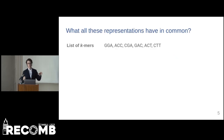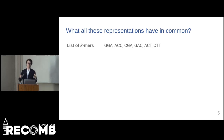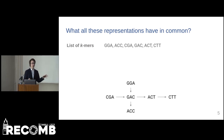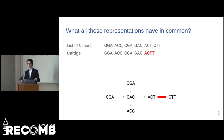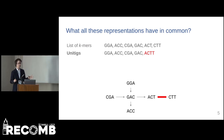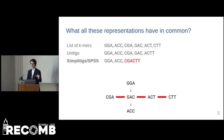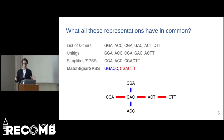Given a set of k-mers, if we want to reduce the cumulative length, we can create a corresponding de Bruijn graph and compact the non-branching vertices to obtain unitigs. If we want to compress further, we can compute simplitigs, and even further by computing matchtigs.